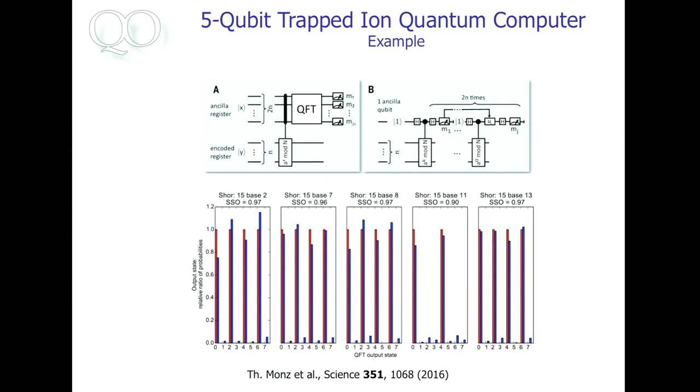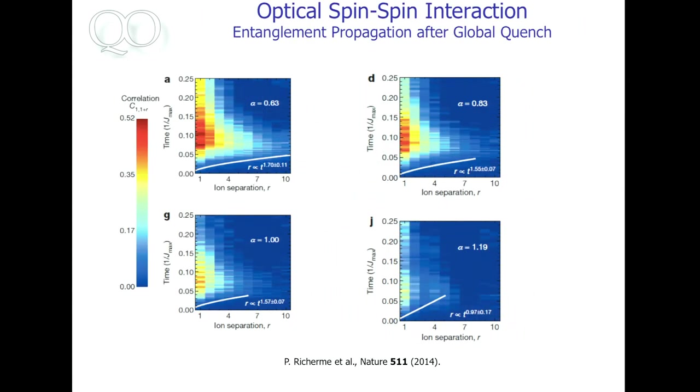And when you repeat this algorithm a few times, you can, with 99% fidelity, confidence, you can make a statement about the factors of 15. So you can do this with 100% fidelity, but a quantum computer, I mean, that's the beginning of the quantum computing age.